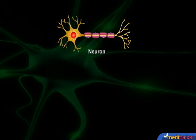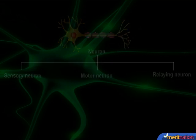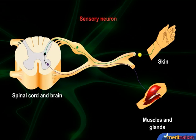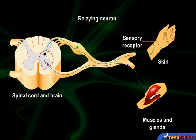Neurons are also of three types: sensory neurons, motor neurons, and relaying neurons. Sensory neurons transmit impulses from the sensory receptors to the brain and the spinal cord. Motor neurons transmit messages from the brain to muscles and glands. Relaying neurons are found in the brain and spinal cord, and serve as connectors between the sensory and the motor neurons.